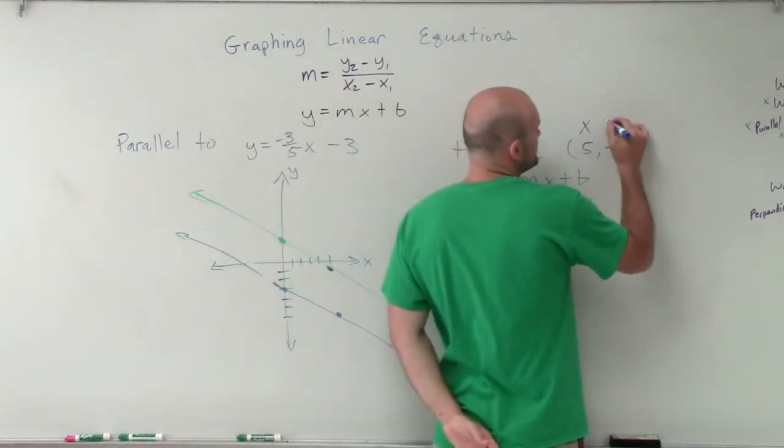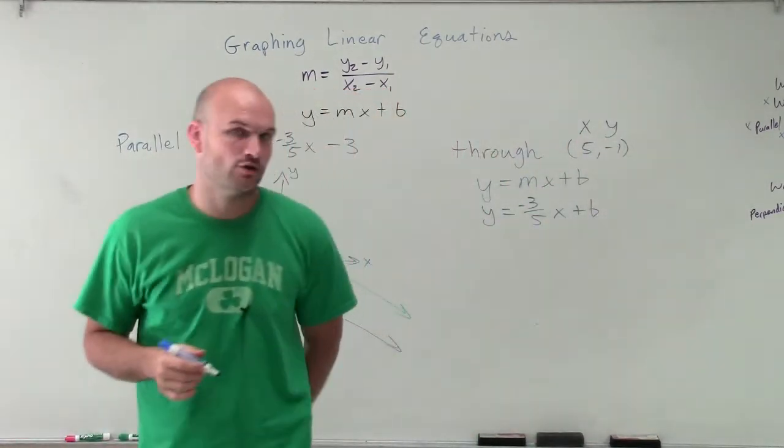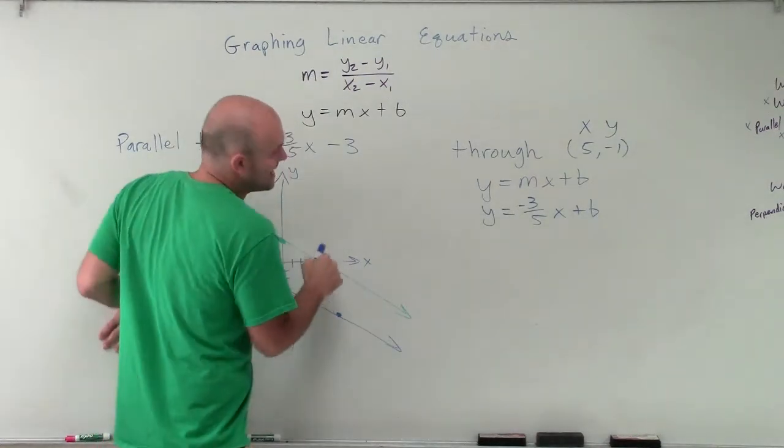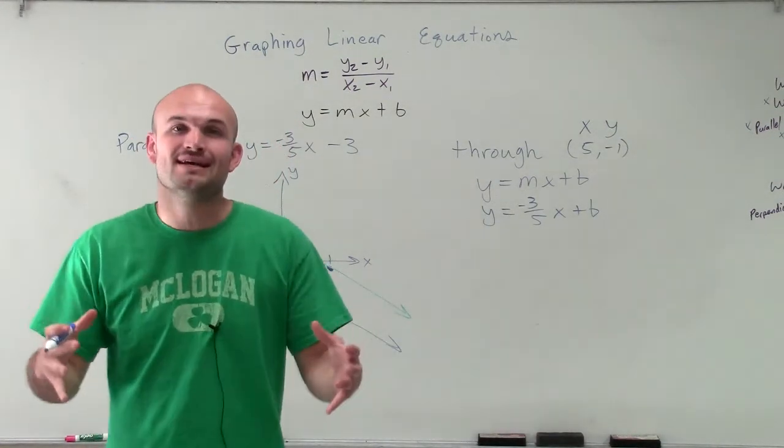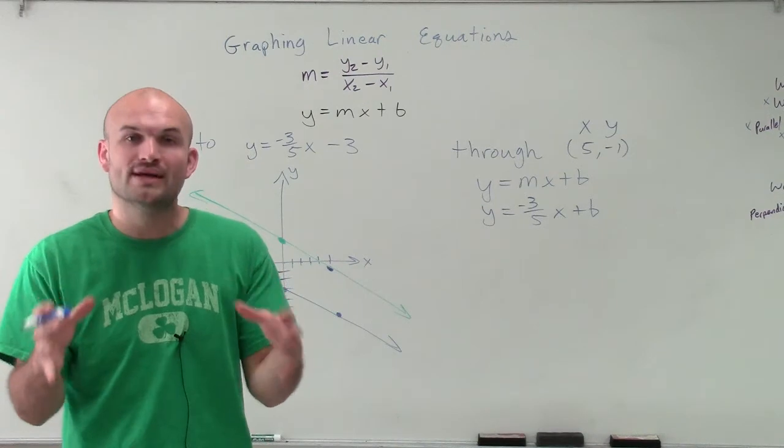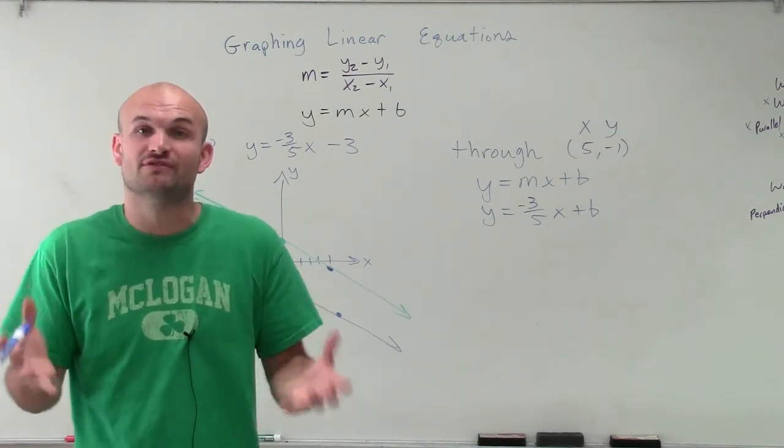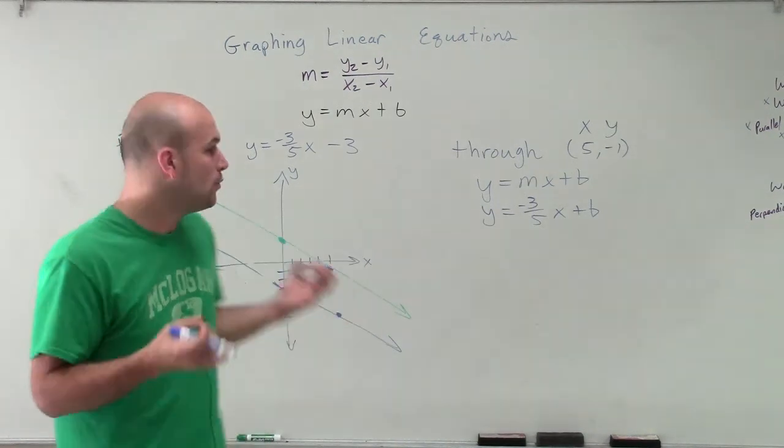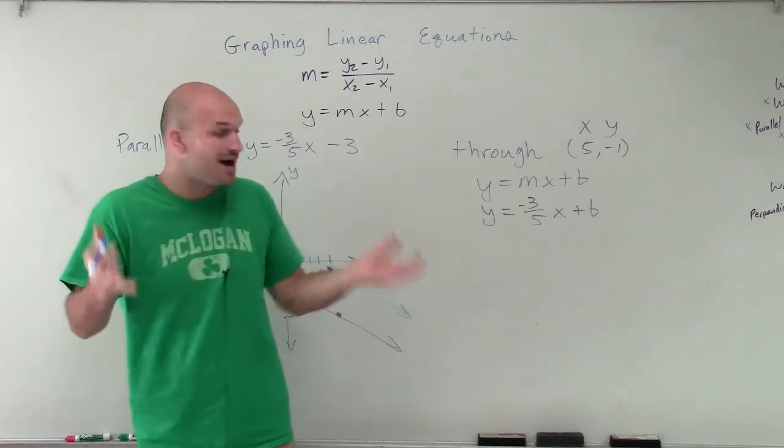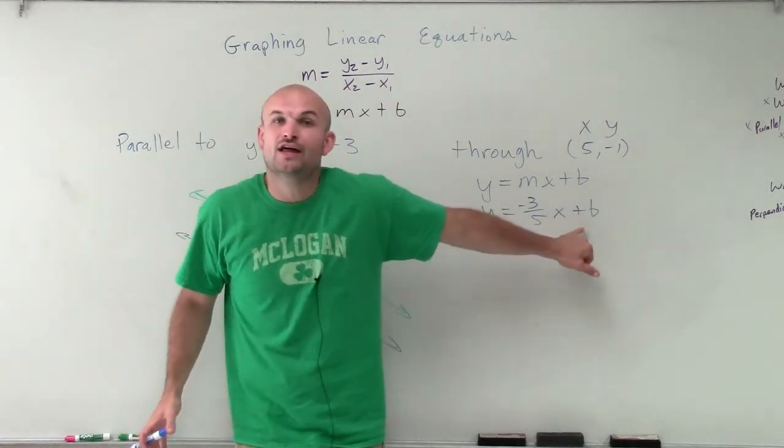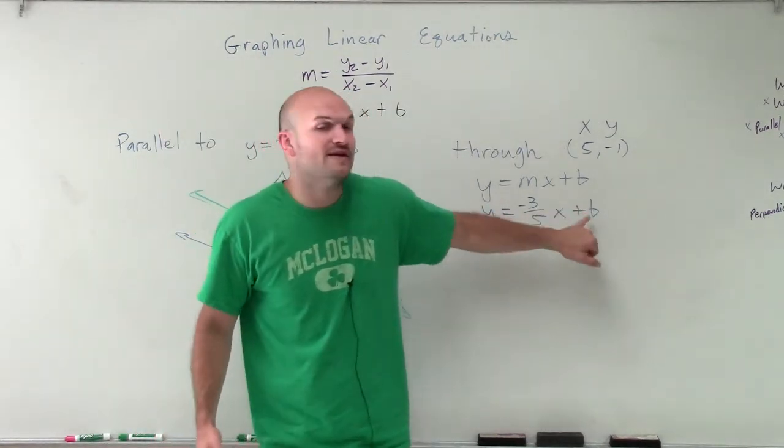Well, that point, we know we can label as an x and y coordinate. And that point lies on the line. Therefore, that point is going to make whatever your equation of your line, it's going to make it true when you have all the correct values. The only problem is we don't have the correct value for our y-intercept. So we need to figure this out.